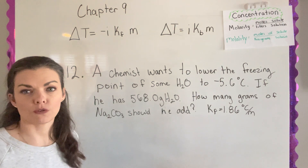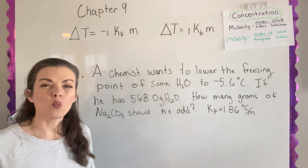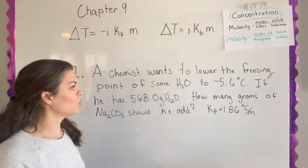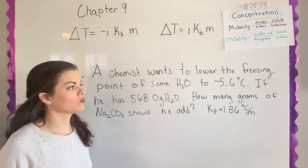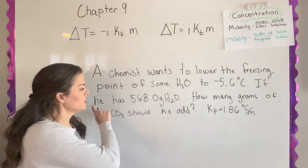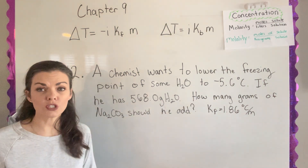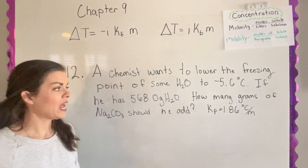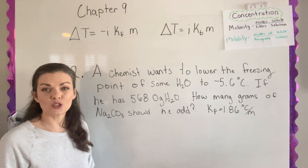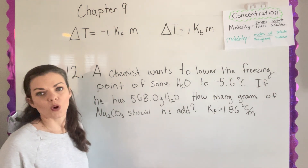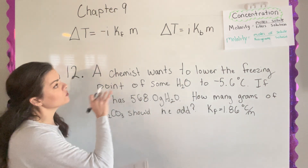In question 12, a chemist has a sample of water and wants to lower the freezing point by 5.6 degrees Celsius. The sample of water is 568 grams. The question is: how many grams of sodium carbonate do I need to add to lower the freezing point by that amount? We'll calculate similarly but we're looking for a different variable.